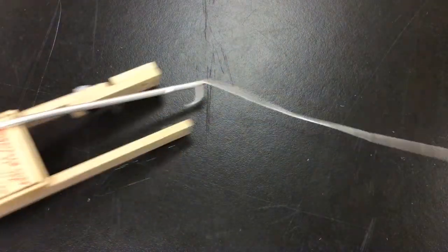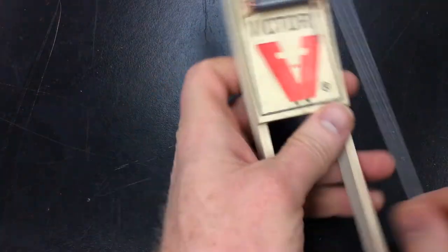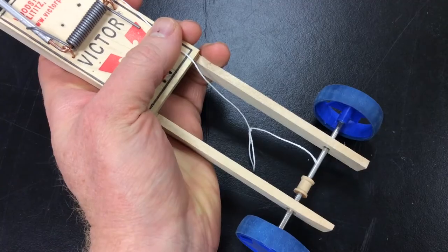And that is how we tie the string to the lever arm so that it can transfer power to the back wheels.